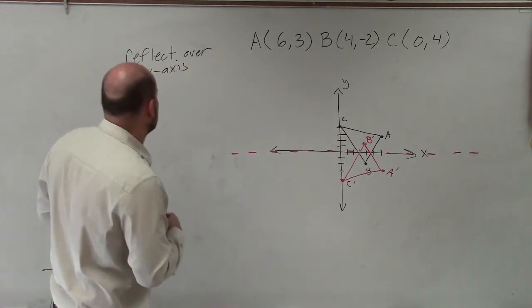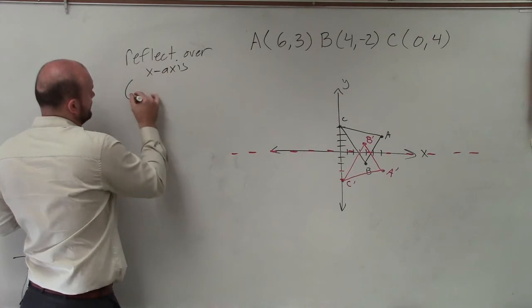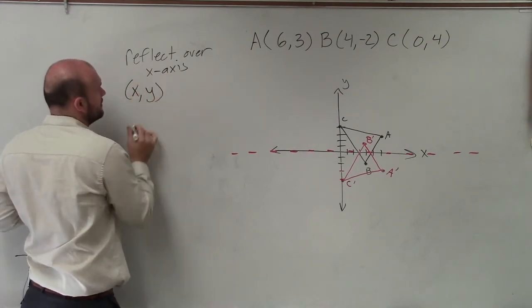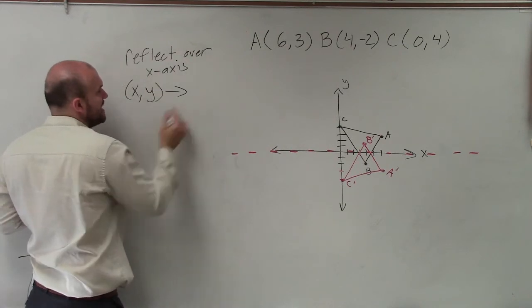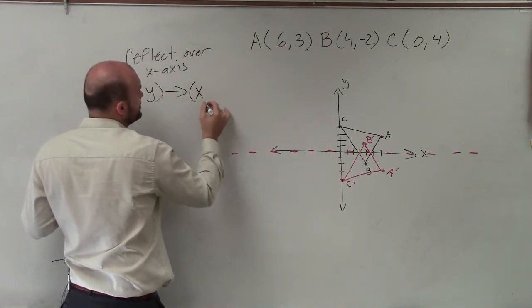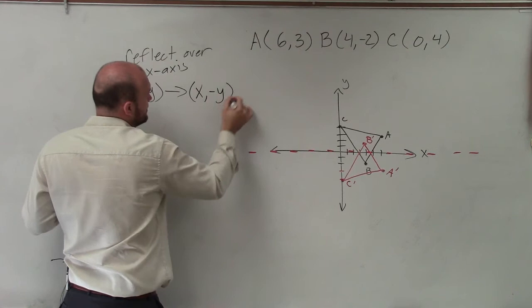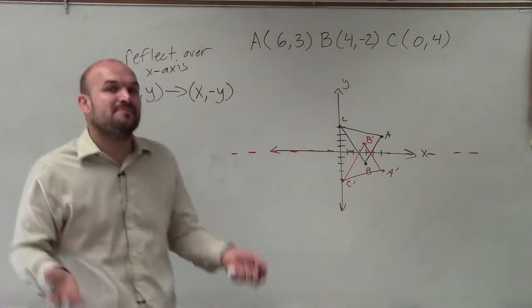So when we're given a point, any coordinate point that has an x comma y, when we want to apply the reflection over the x-axis, all we're simply going to do is take the opposite, not the negative, but the opposite of the y-coordinate.